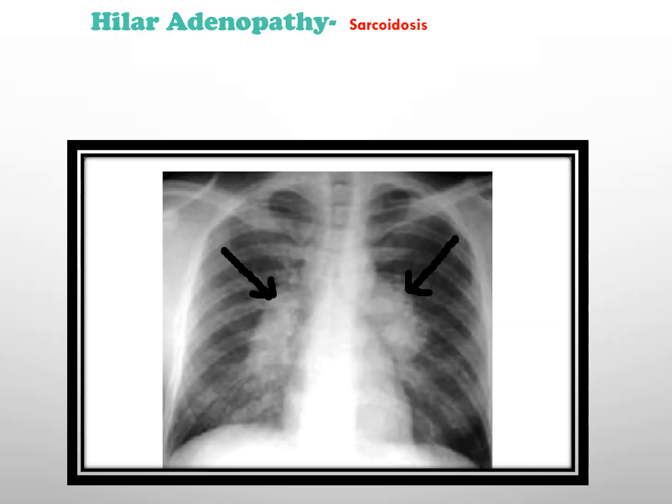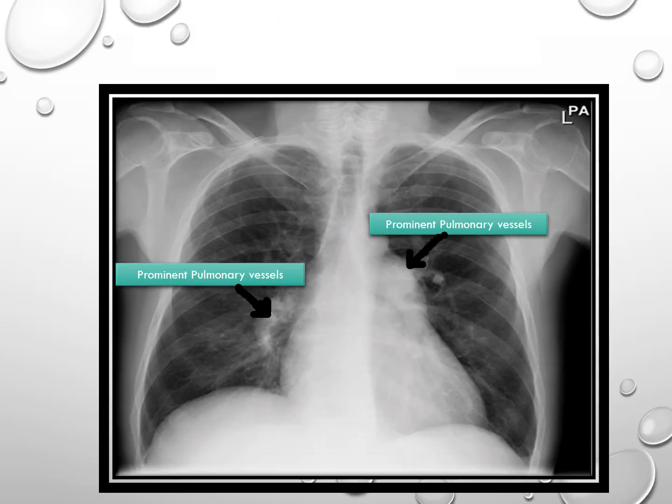This x-ray displays a predominantly nodular opacity pattern, particularly noticeable in the upper lung zones, with the possibility of accompanying hilar adenopathy, which is commonly seen in sarcoidosis.